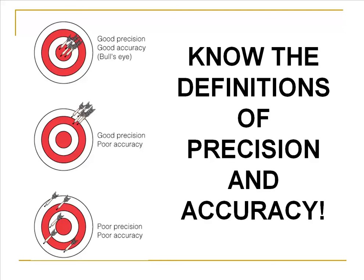At the very top we see this is good precision and this is good accuracy. Good precision means that all of your darts are really close together — that you can replicate your throw every single time. Good accuracy basically means that you can hit the bullseye, which represents the true value. Good precision and good accuracy are completely different and do not have to relate to each other.